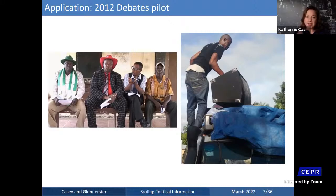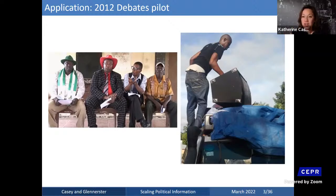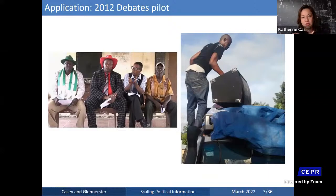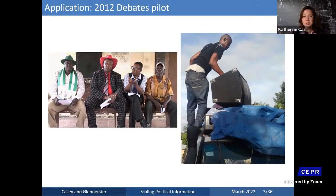The information was delivered via a road show — literally a truck loaded with a generator, sound system, and projector — that went around to rural communities and projected the videotaped debate on the side of polling centers. Think of these as big public gatherings where a couple hundred people would watch. We evaluated this through a randomized control trial: the truck's destinations were a random selection of polling centers, allowing us to see how debates changed voters, candidate campaign expenditure, and the long-run accountability of elected MPs.